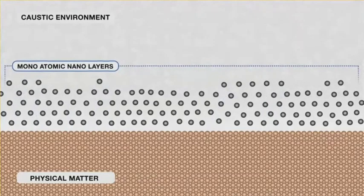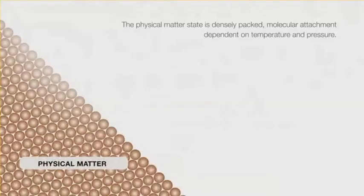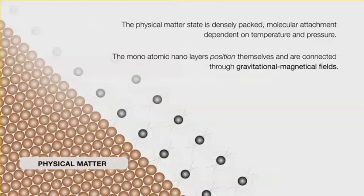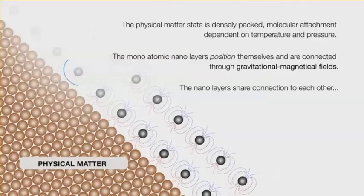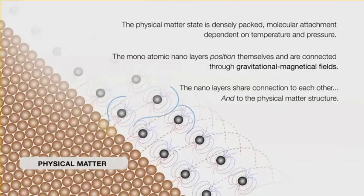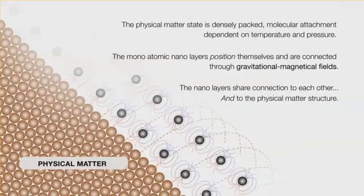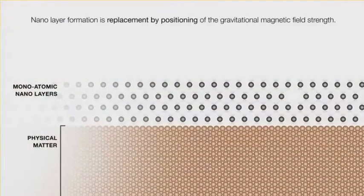Looking at the image: the physical matter state is densely packed molecular attachment, depending on temperature and pressure. The mono-atomic nano-layer positions itself and is connected through gravitational-magnetic fields. The nano-layers share connection to each other and to the physical matter structure — that connection is the fields. Nano-layer formation is replacement by positioning of the gravitational-magnetic field stream.